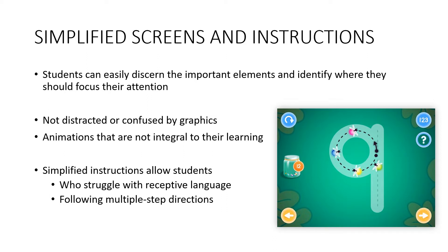As the student draws the number nine by following the little arrow, they catch bugs that go into the jar — drawing a circle and then a line down — and earn points. It's a very simple screen with few distractions; the main focus is the number nine. The student draws it, earns points, and clicks the lower right to go to the next number. This is a simplified screen where you don't need to know how to read to play and learn from the game.